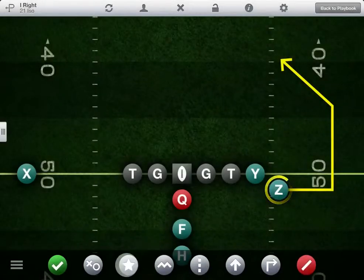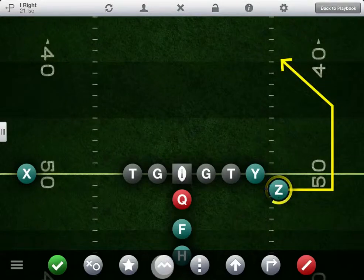You can designate any position as the intended receiver. Tap this button to make the first segment zigzag to indicate pre-snap motion.